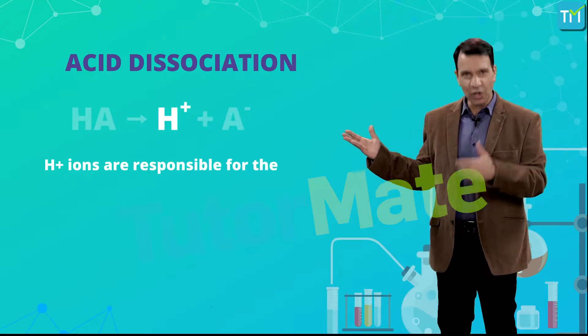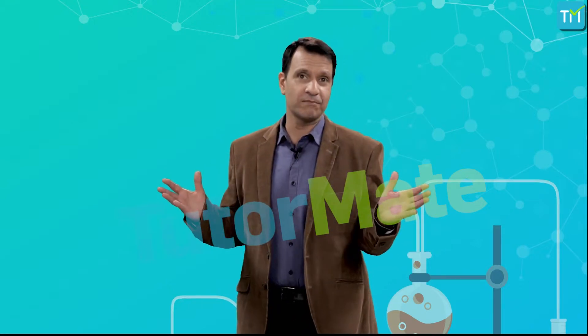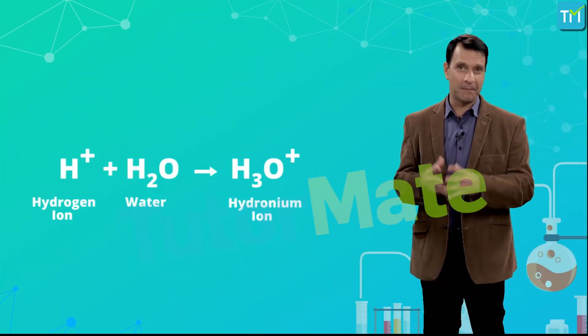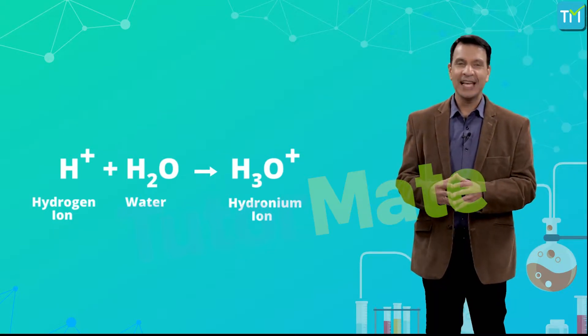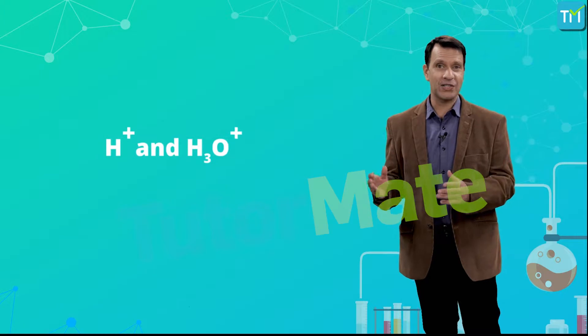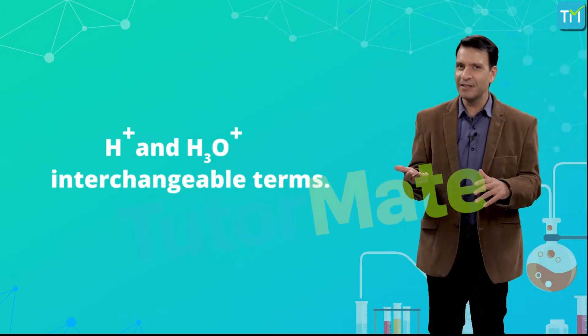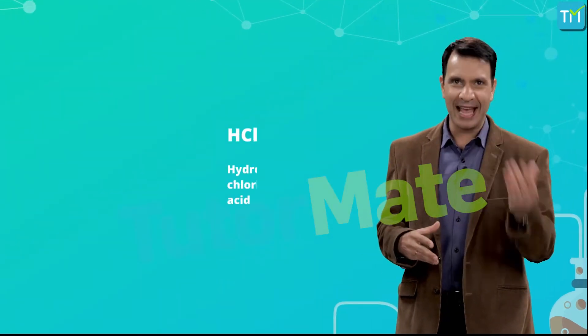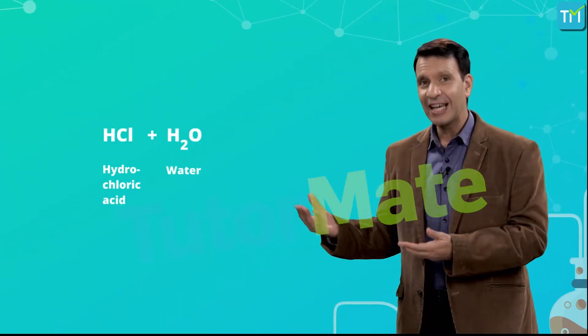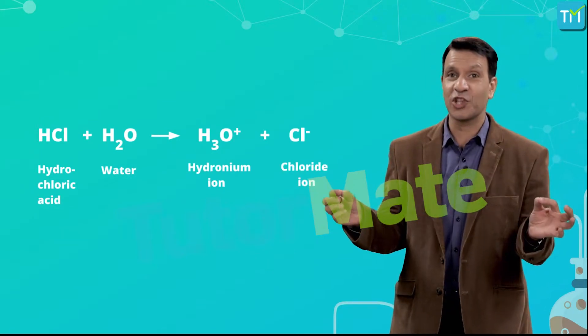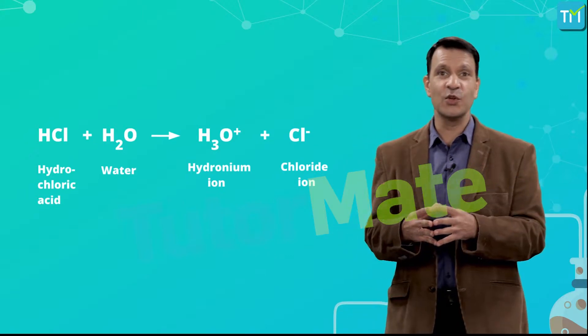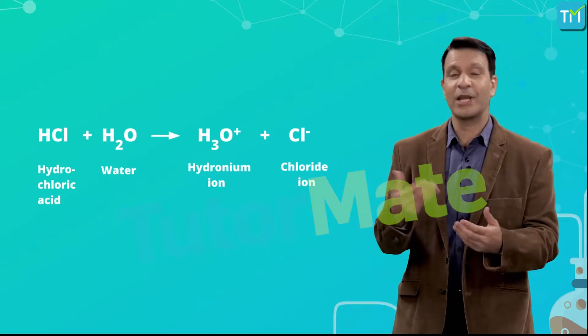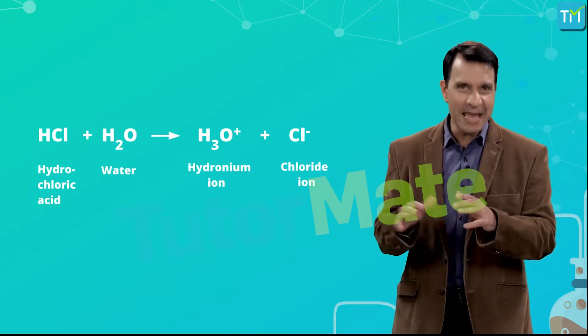These H⁺ ions are responsible for the common characteristics of acids. However, hydrogen ions cannot exist alone in a solution — they combine with water molecules and exist as hydronium ions, that is H₃O⁺. Hydrogen ions and hydronium ions are interchangeable terms, so to keep things simple, they are represented only as H⁺ ions. For example, when hydrochloric acid (HCl) is dissolved in water, the hydrogen atom and chlorine atom dissociate from each other. The release of hydrogen ions increases the concentration of H⁺ ions, which react with water to form hydronium ions, making the solution acidic.